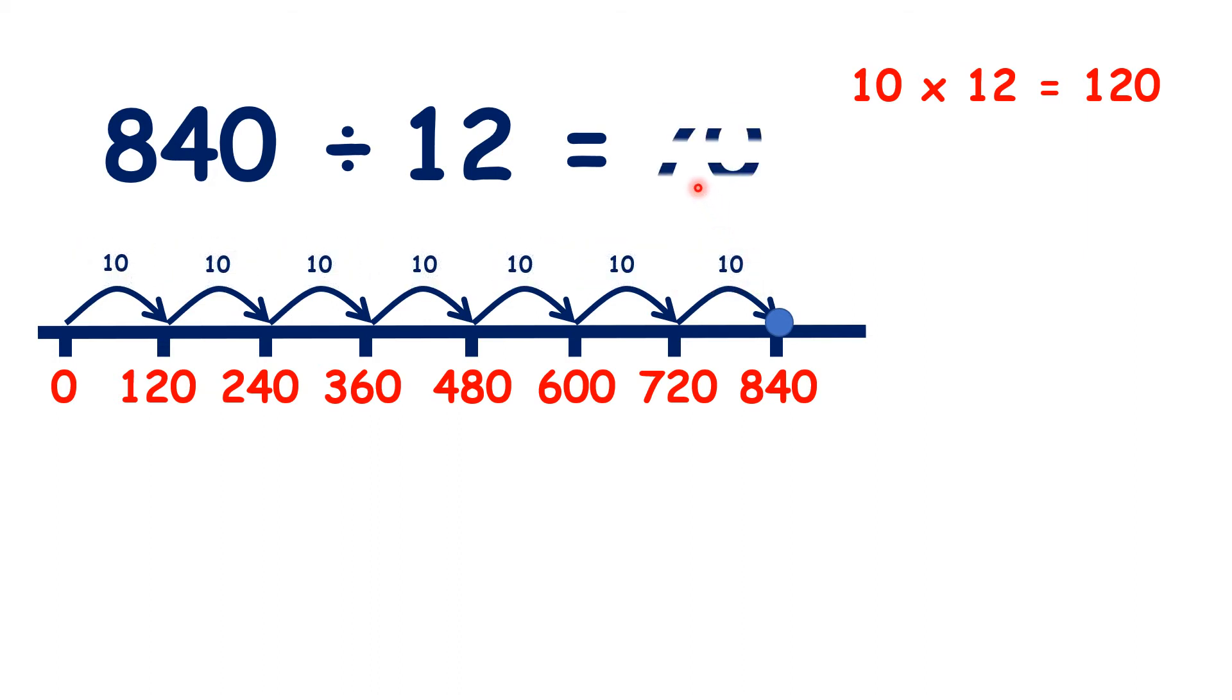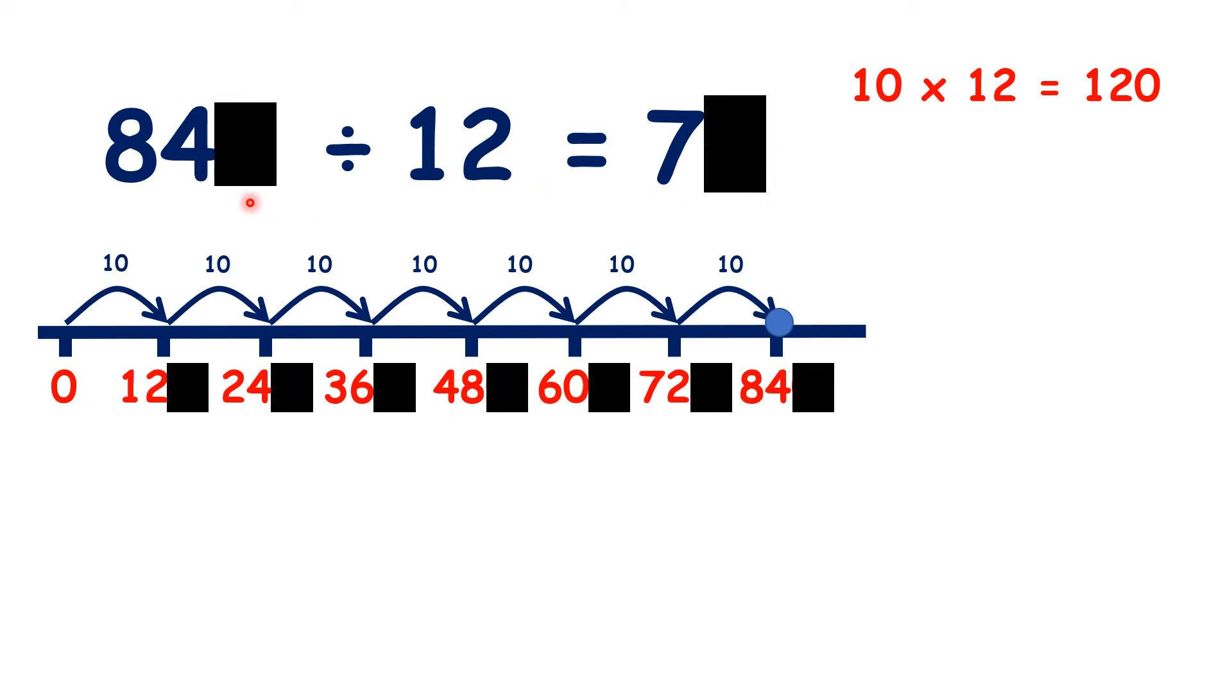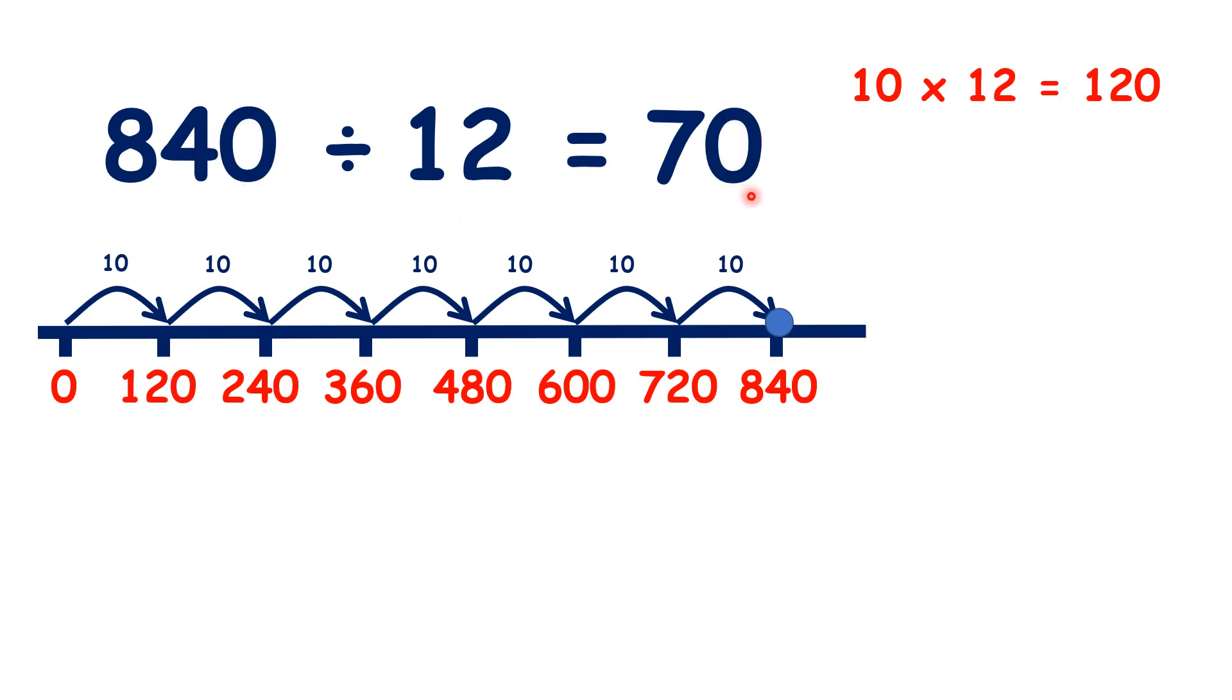our answer must be 70. But we don't really need to use a number line, because if we know that 84 divided by 12 is 7, we know that 840 divided by 12 is 70.